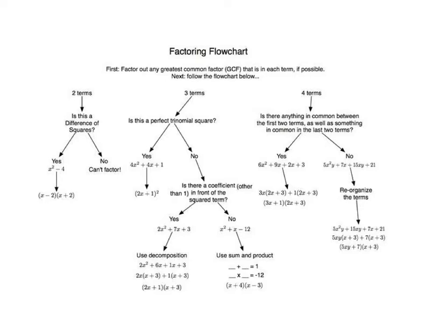The first type of factoring you should always do, regardless of the polynomial, is factor out the greatest common factor (GCF). Remove it if one exists - just put it outside the brackets and then factor the remainder.